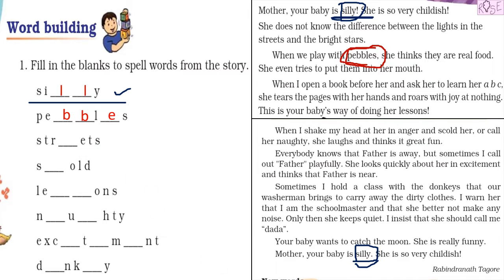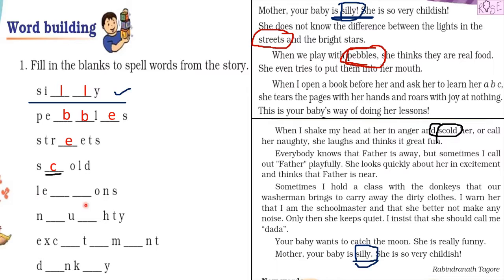Next is 'str_ets' — only one letter is missing, then 'e', 't', 's'. Which word is this? Yes, you are right — it is 'street'. Only an 'e' is missing, so we write 'e' here. Next, the following word also has only one letter missing: 's', then a missing letter, then 'o', 'l', 'd'. Which word from the story starts and ends with that pattern? Yes, you are right — it is 'scold', S-C-O-L-D.